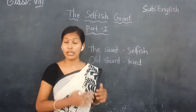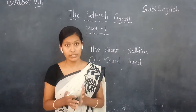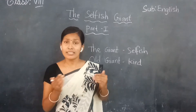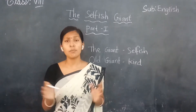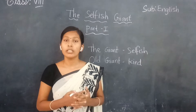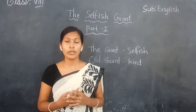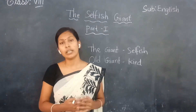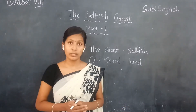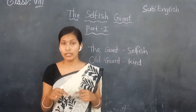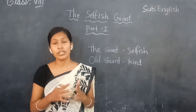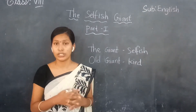In the garden he has a big castle where he stays. When he came back, he saw many children playing in the garden. He shouted at them and told them to go out. He put up a board that said trespassers will be prosecuted. Until this we discussed in the last session.